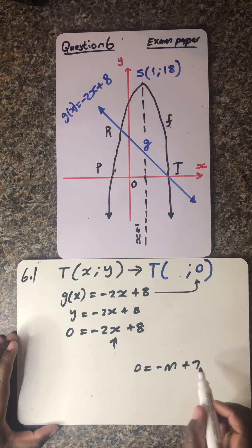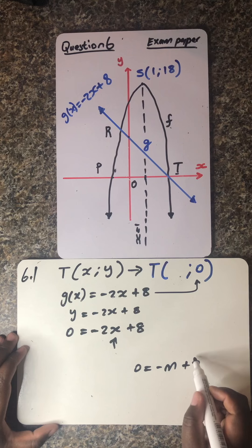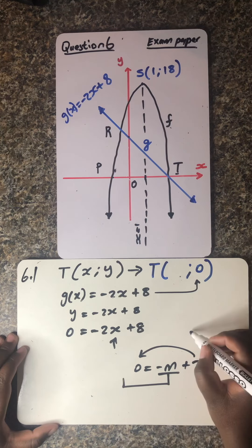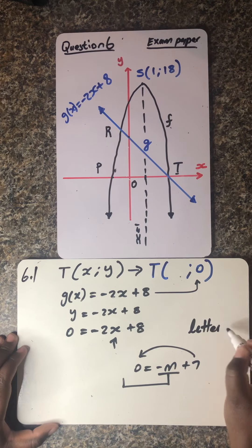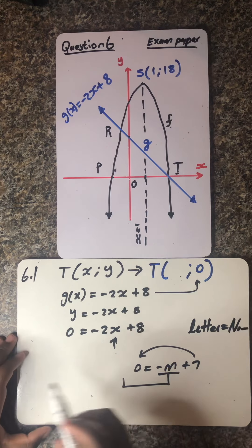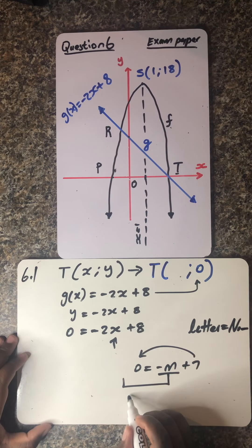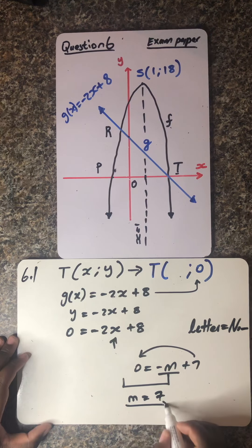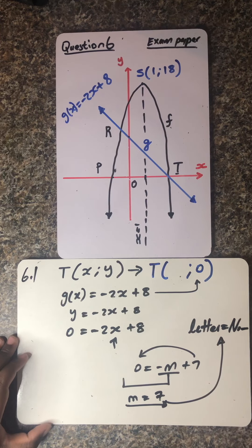Remember guys, you don't necessarily need to move the number to the other side. You can still move this letter to the other side. Why? Because you want to have your final answer in the form of letter equals number. So that means you can just move that m. Obviously it changes the sign, then it becomes positive m which is equals to 7. So this is the format in which you want your final answer.